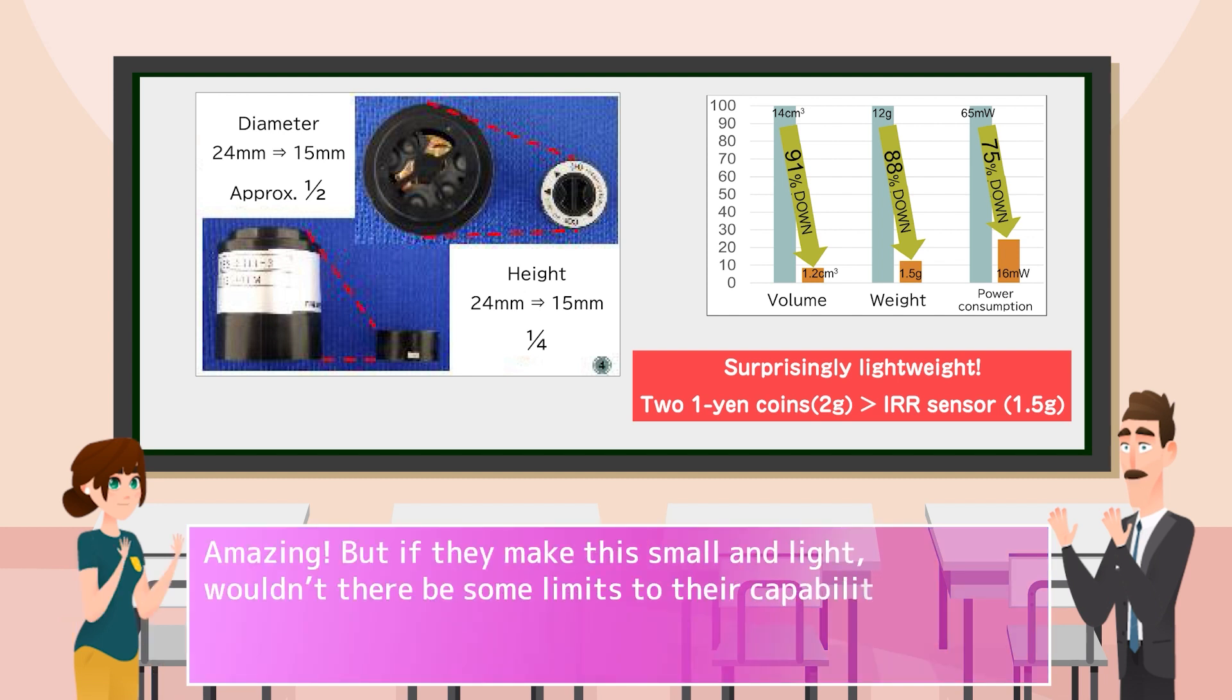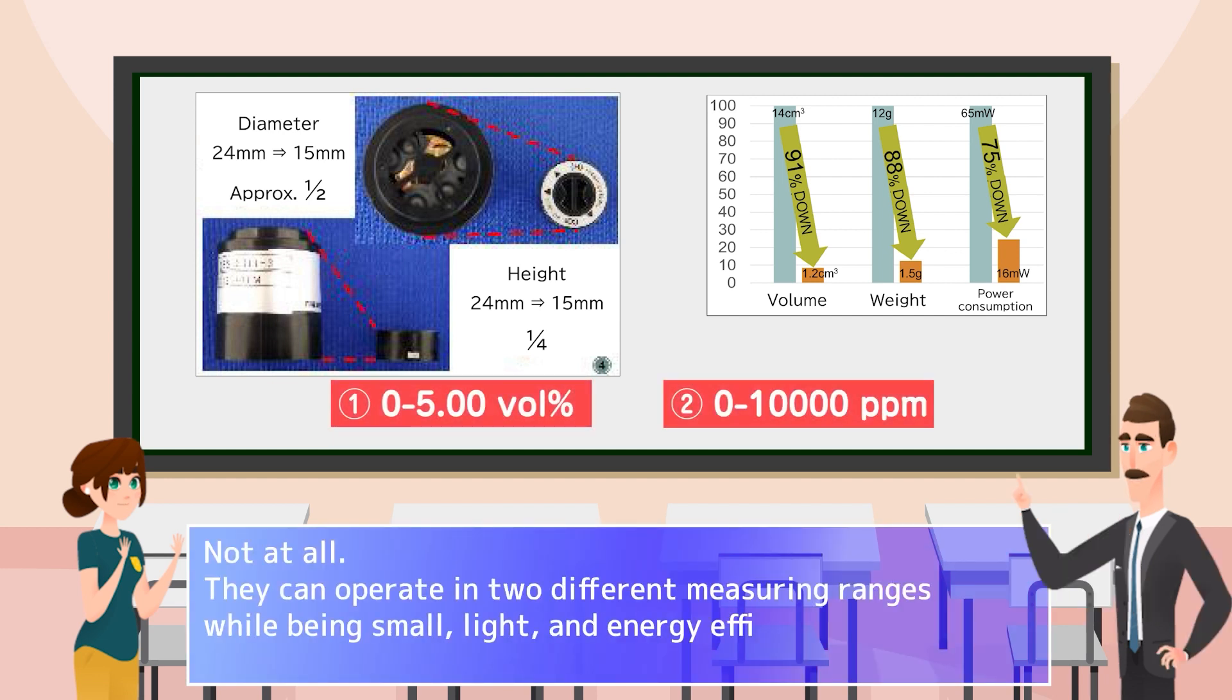Amazing. But if they make this small and light, wouldn't there be some limits to their capabilities? Not at all. They can operate in two different measuring ranges while being small, light, and energy efficient.